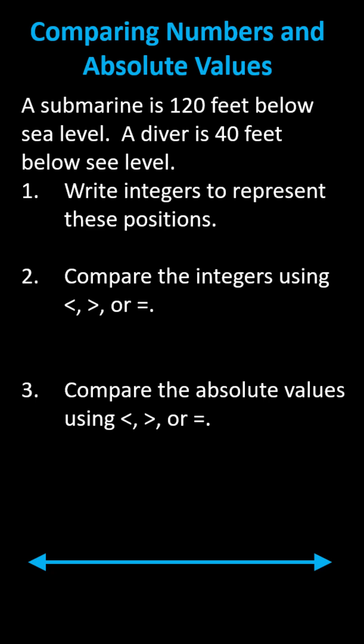Because the submarine is 120 feet below sea level, we use the integer negative 120 to represent this position. And because the diver is 40 feet below sea level, we use the integer negative 40 to represent the diver's position.